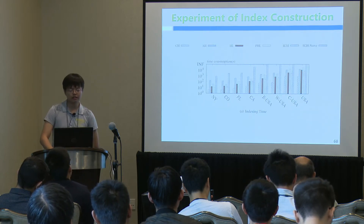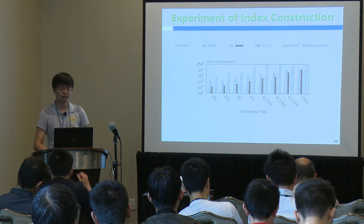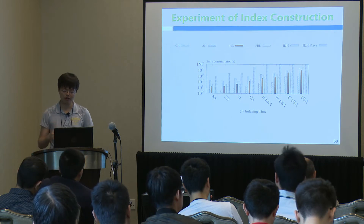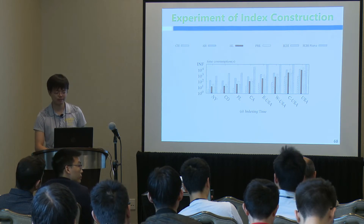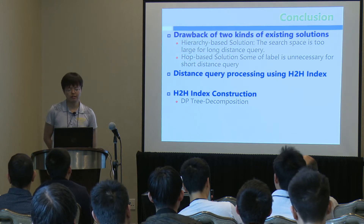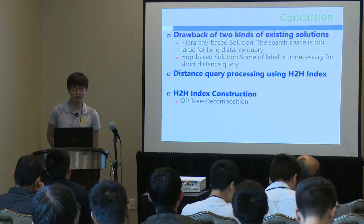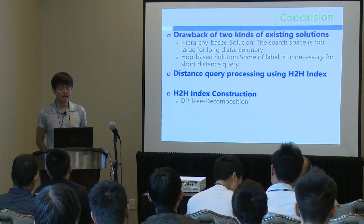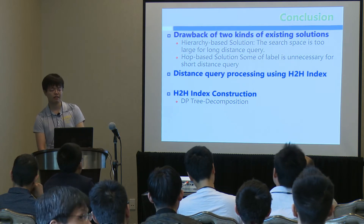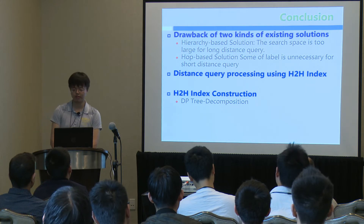For the index construction time, the largest graph USA costs about 100 minutes for H2H. In conclusion, we studied the drawbacks of hierarchy-based and hop-based existing solutions, presented query processing using the H2H index, and gave the construction algorithm for H2H.